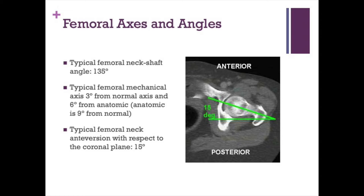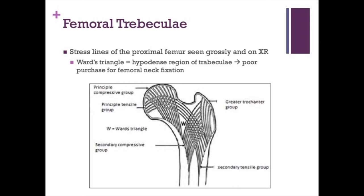Typical femoral neck anteversion with respect to the coronal plane is 15 degrees. The femoral trabeculae are intramedullary bone that aligns in response to typical stresses on the proximal femur — stress lines visible grossly on pathology and on x-ray. Ward's triangle is a relatively hypodense region near the calcar with poor bone quality, making it a poor spot for purchase for femoral neck fixation of any implants or devices.